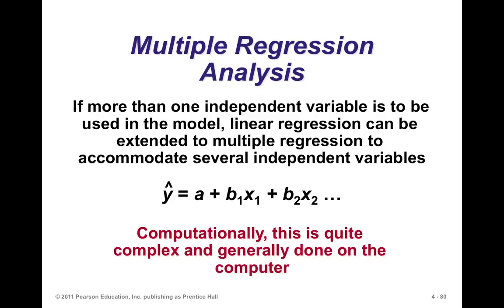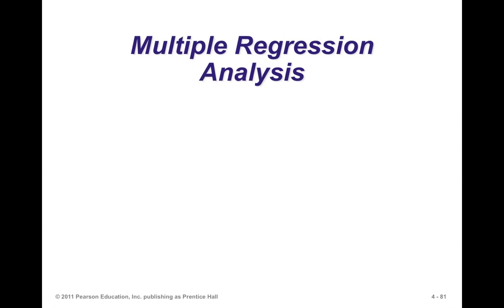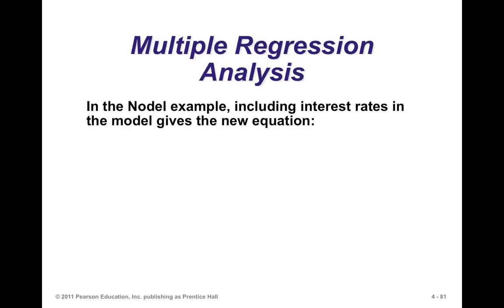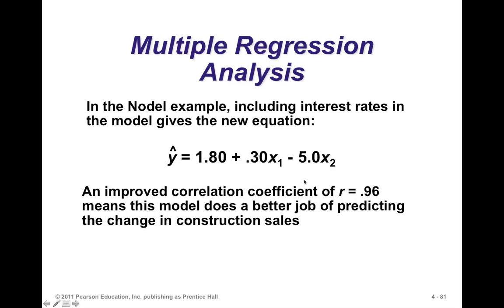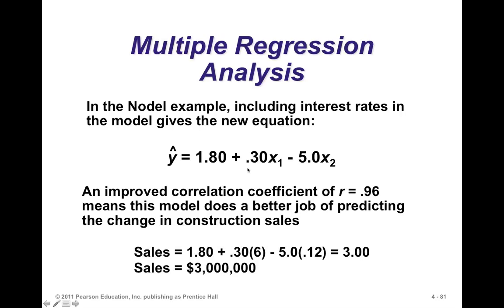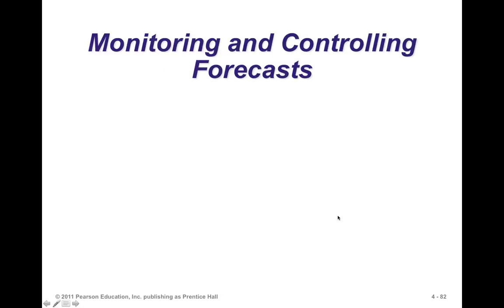In some cases we have multiple independent variables, so we use multiple regression analysis, where our predicted variable is a function of several independent variables. For example, housing starts might depend on interest rates, the consumer price index, and population. We typically don't do this by hand — we use software to assist in developing the equations.